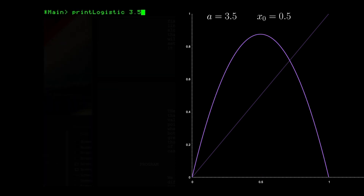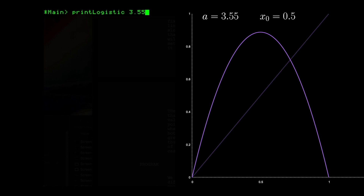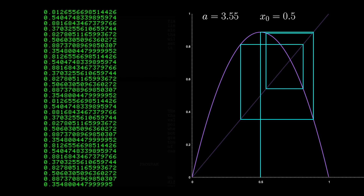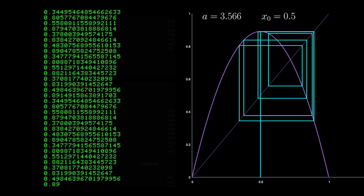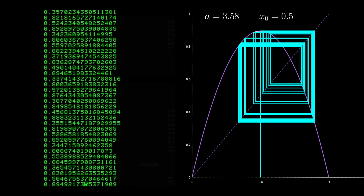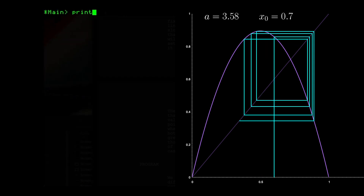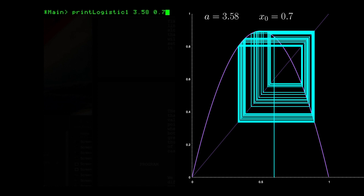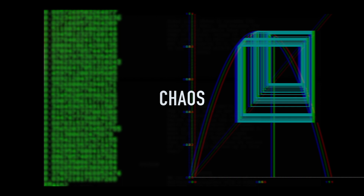Now let's try a larger number, 3.5. This time it settles into a repeated pattern of four numbers. As we continue to increase the parameter, we see that the pattern doubles in size to 8, 16, but after around 3.57 it appears to be completely without pattern — not settling down. Moreover, we get different behaviors depending on the initial value. This is the essence of chaos.